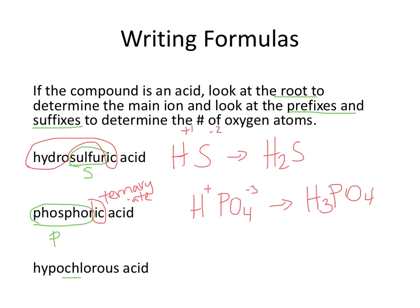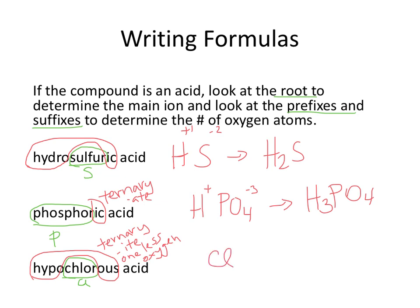For the last acid, chlor is my root, so that's chlorine. The prefix hypo and suffix -ous tells me that it's ternary. The -ous tells me it's based on the -ate ion, but hypo tells me it's one less oxygen. Chlorate is ClO₃, chlorite is ClO₂, so hypochlorite is just ClO. Hydrogen is plus 1, all the chlor ions are minus 1, so those charges cancel: HClO.